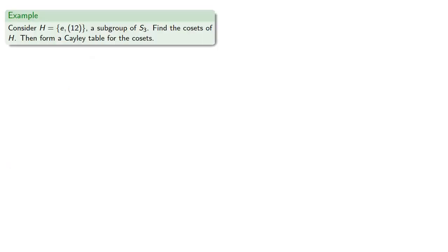So let's consider H being the identity and the transposition (1,2), a subgroup of S3. Let's find the cosets of H and then form a Cayley table for the cosets.